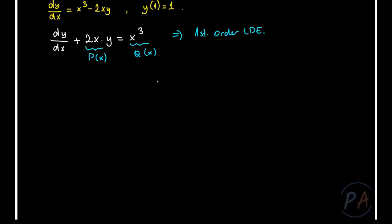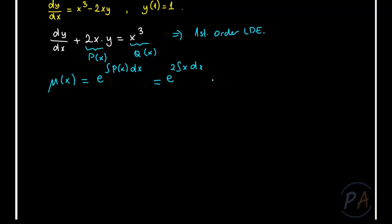Let's continue with the method of the integration factor. We write mu of x, the integration factor of this equation, as the exponential of the integral of p(x) dx. That is the exponential of the integral of 2x dx, which equals exponential of x squared.